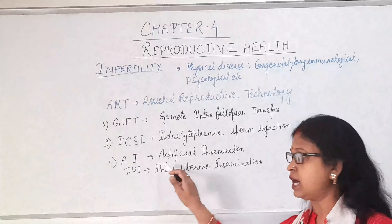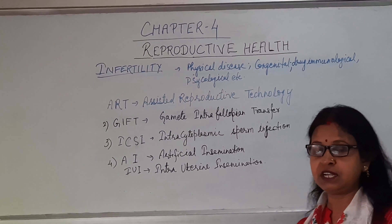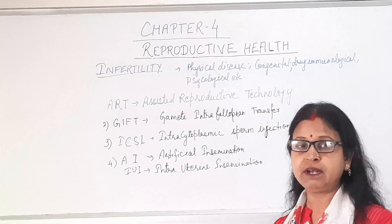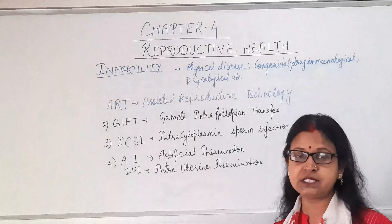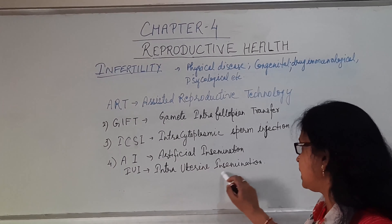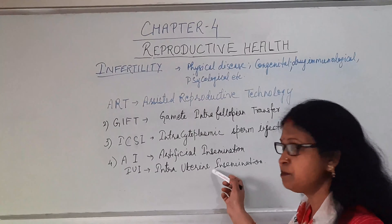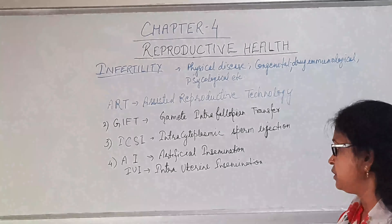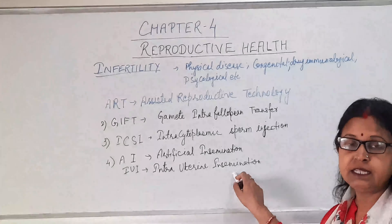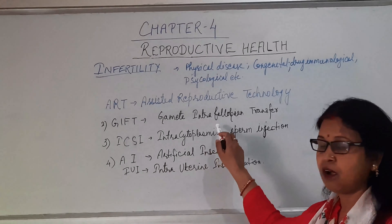The next method is AI or Artificial Insemination, and IUI that is Intrauterine Insemination. Again, when the male is incapable of proper insemination or has a low sperm count, artificial insemination or intrauterine insemination is done. The sperm or semen is collected from the male and introduced into the uterus or uterine part of the female, and that is why it is known as AI or IUI.